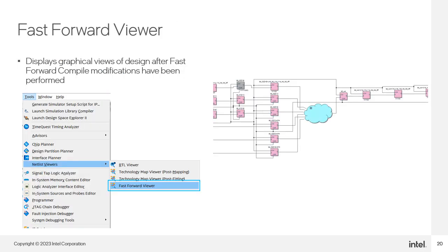Another way to analyze Fast Forward Compile results is using the Fast Forward Viewer, found in the Quartus Prime software in the NetList Viewer submenu of the Tools menu. Like other NetList Viewers, the Fast Forward Viewer displays a graphical representation of the design, showing the results of the Fast Forward analysis modifications. Be warned — there may have been a lot of optimizations performed on the design, so understanding this schematic can be a challenge. It works best when analyzing sub-modules or smaller parts of the design.